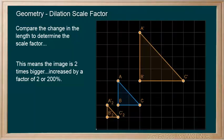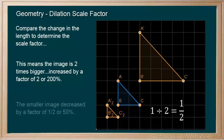Here's an image that's been reduced. We can apply the same method to determine its scale factor. This time the image side AB is only 1 square. So 1 divided by 2 is 1 half. So our image now decreased in size by a half or 0.5 or 50%.